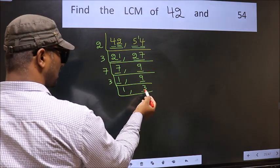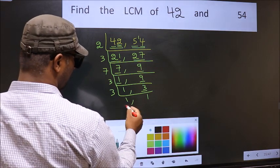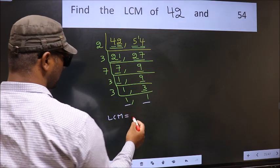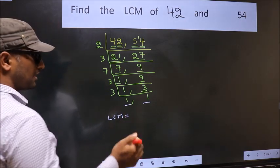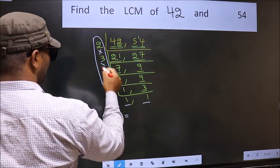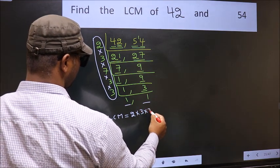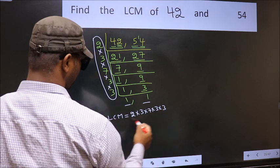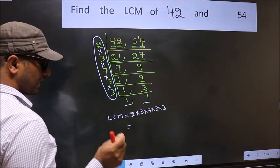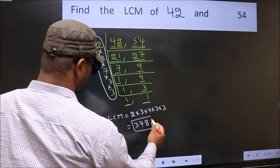Now we have 3. 3 is a prime number, so 3 times 1 is 3. So we got 1 in both the places. So our LCM is the product of these numbers: that is 2 into 3 into 7 into 3 into 3. When we multiply these numbers we get 378 is our LCM.